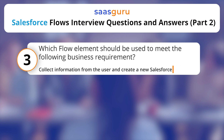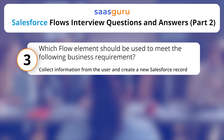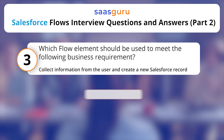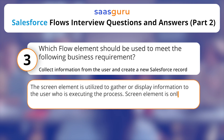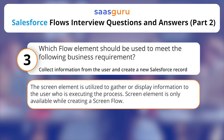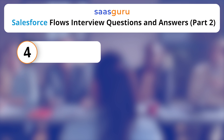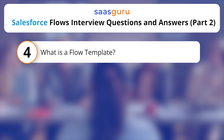Which flow element should be used to meet the following business requirement: collect information from the user and create a new Salesforce record? The screen element is utilized to gather or display information to the user who is executing the process. The screen element is only available while creating a screen flow.